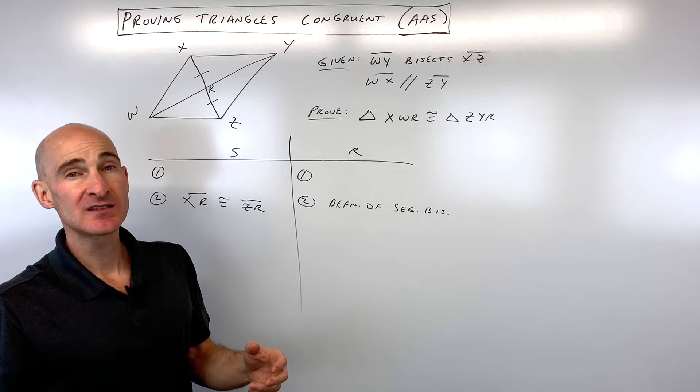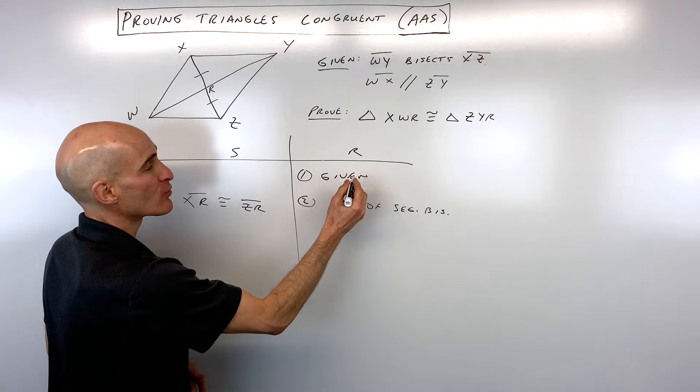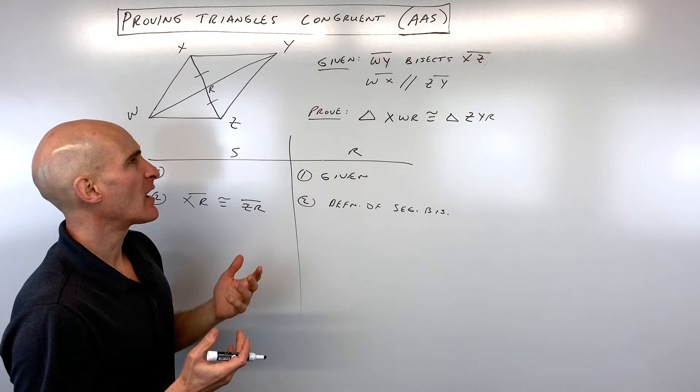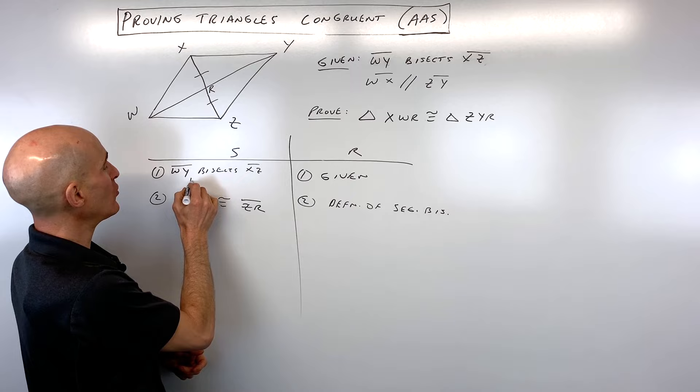Now, you notice I skipped number one, step one. Generally what students like to do, and I like to do it too just to get it out of the way, is go ahead and write down the givens as your first step. So you don't have to do it that way. Sometimes it makes the proof flow a little bit better if you put some of the givens as you need them in the proof. But a lot of students just like to write them first, so I'll go ahead and do that here. So WY bisects XZ. And then we also have WX is parallel to ZY.